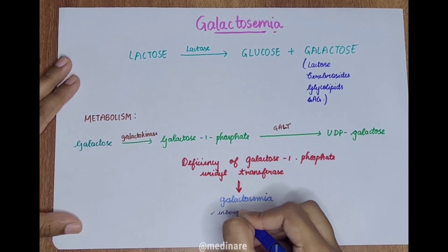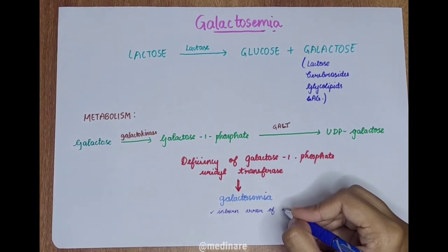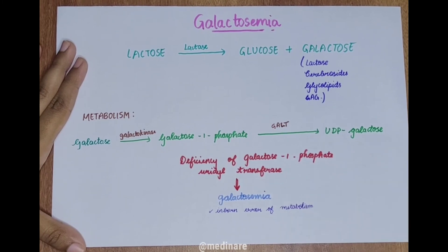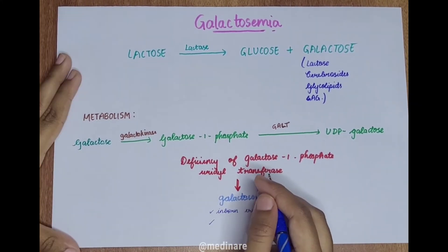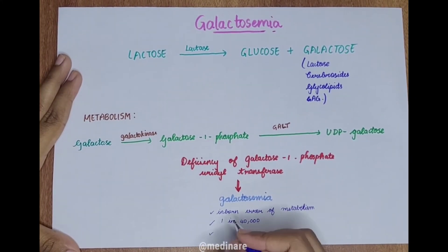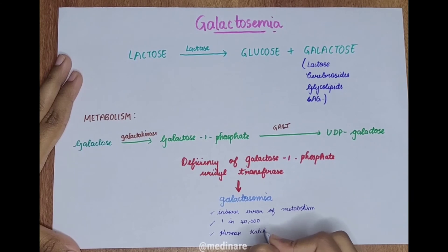Galactosemia is actually an inborn error of metabolism and it occurs in 1 in 40,000 births. It was described by Hermann Kalker.